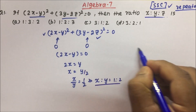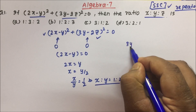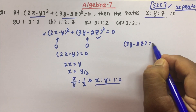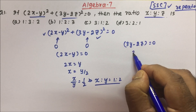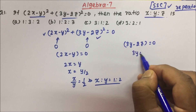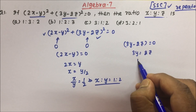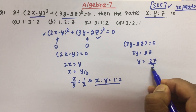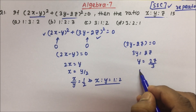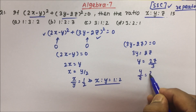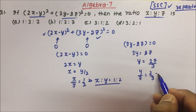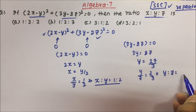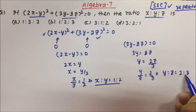Now, what about the second term? That also should be equal to 0. So 3y − 2z = 0, which gives 3y = 2z, so y = 2z/3. Bringing z to this side, y/z = 2/3, and therefore y : z is nothing but 2 : 3.